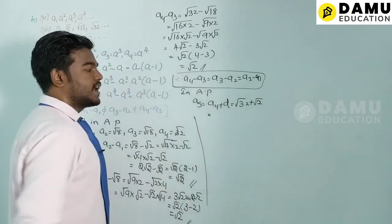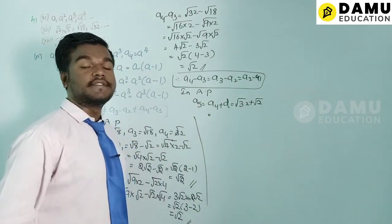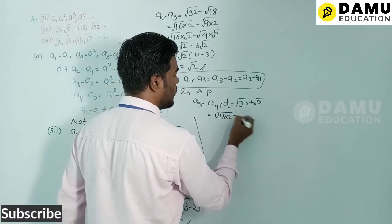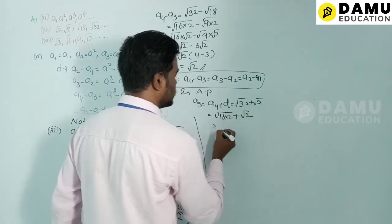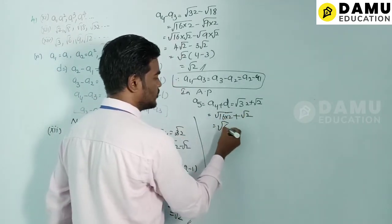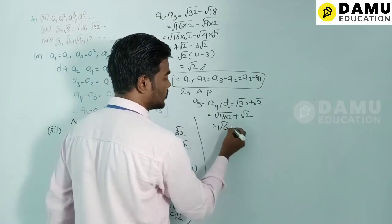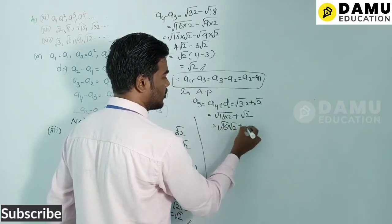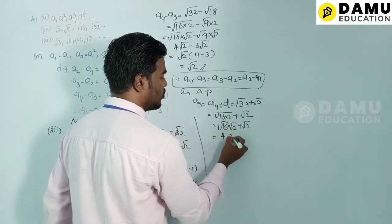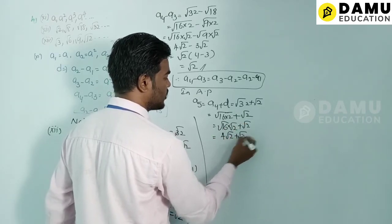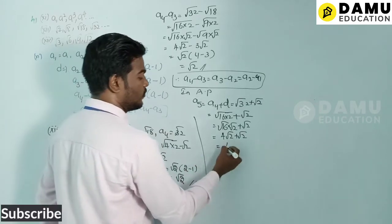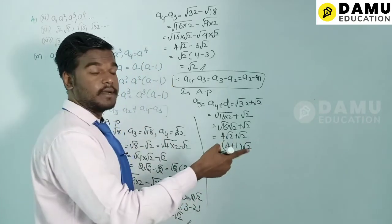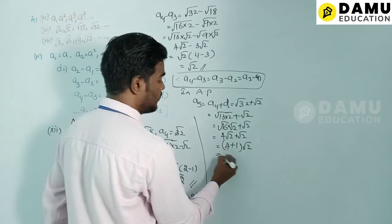Writing √32 = 4√2, we get a5 = 4√2 + √2 = (4 + 1)√2 = 5√2. We can write 5√2 = √(25×2) = √50. So a5 = √50.